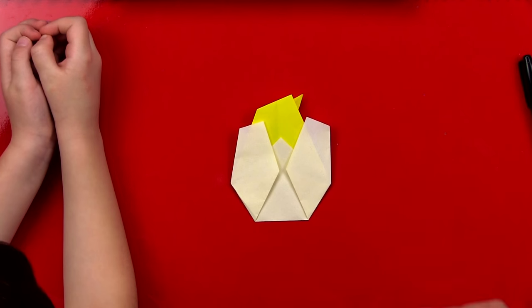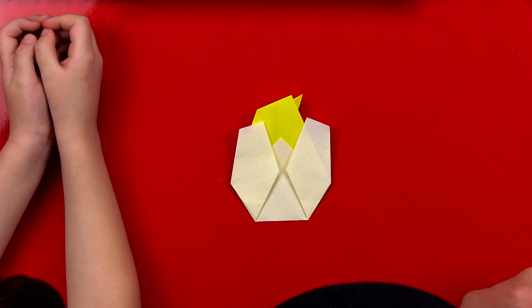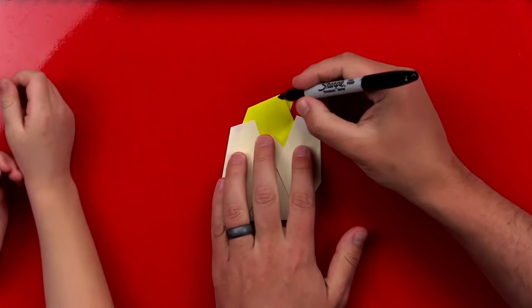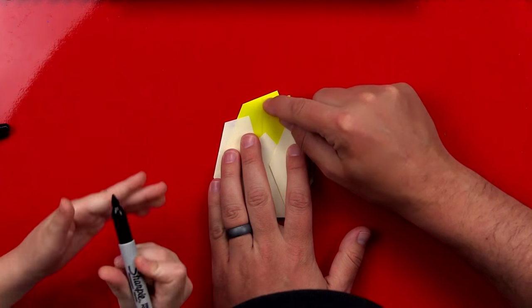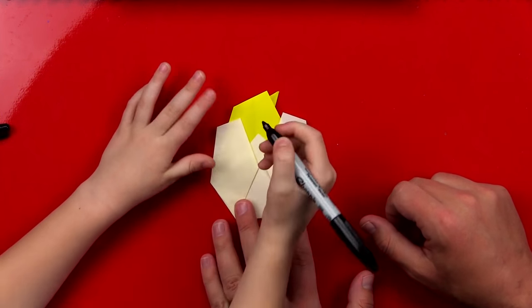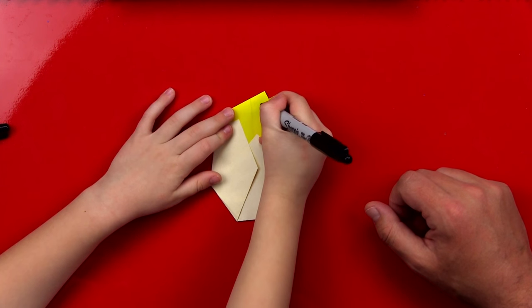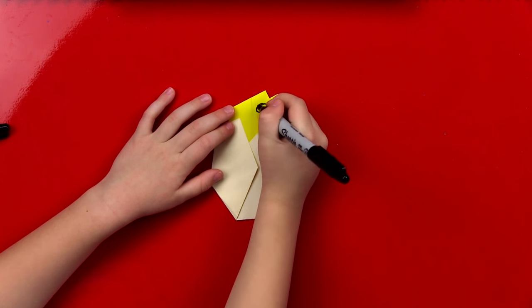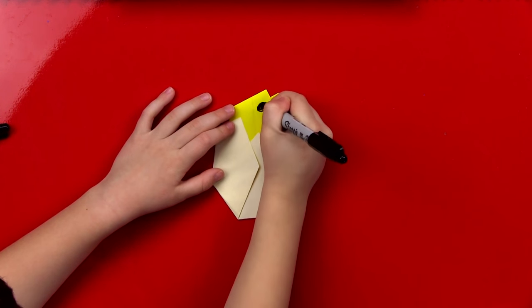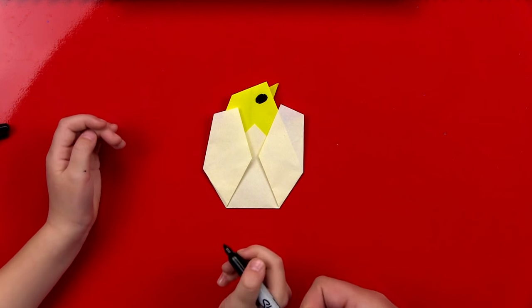Alright, and we did it! There it is! Now we can do one last step. Let's take our marker, and why don't you draw a circle. You can take this one. Draw a circle and color it in for his little chicky eye. And then color it in. You did it! You finished our chicken!